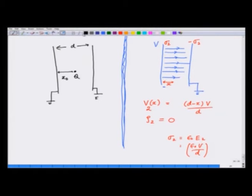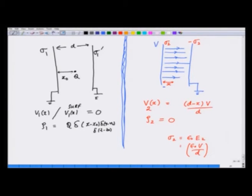Situation 1 is where I want to know sigma_1. This is going to be some sigma on this plate, and sigma_1 prime on the other plate, because the two surface charges need not be the same. v_1(x) is something, but I certainly know that v_1(x) on the surface is 0 because the plates are grounded. rho_1 equals q delta(x minus x_0) delta(y minus y_0) delta(z minus z_0) if this position is that.